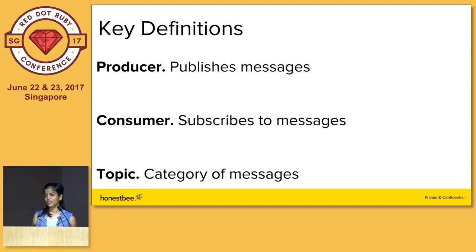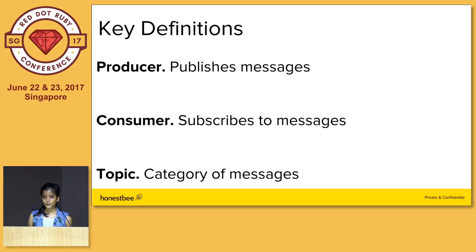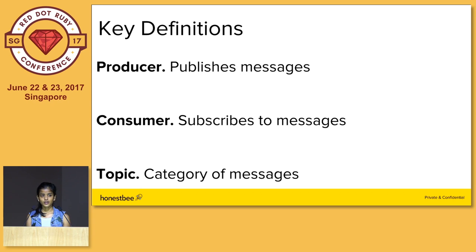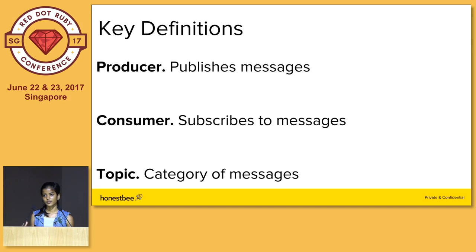So the key terms are producer, consumer, and topic. Let's talk about the simple use case of user creation and sending a welcome message. In our Rails application context, we found that the events you want to send out are often linked to database changes — an insertion or an update. These compose the majority of events we wanted different applications to respond to.